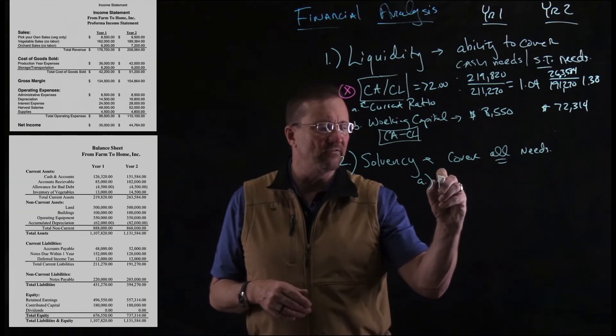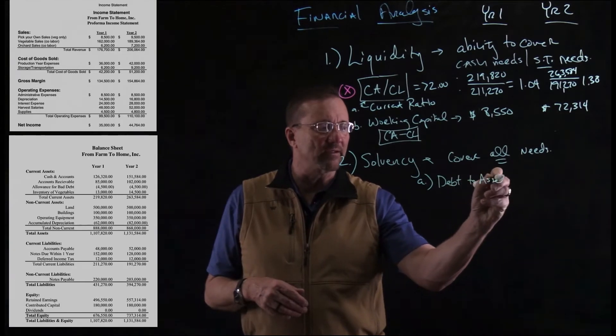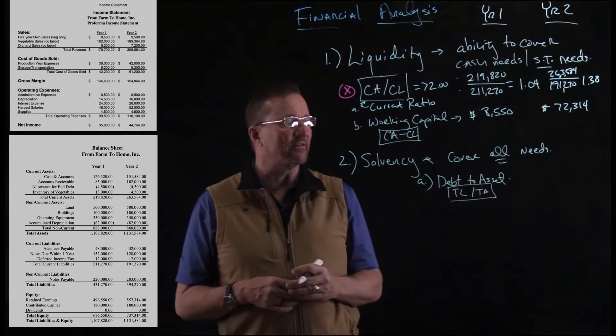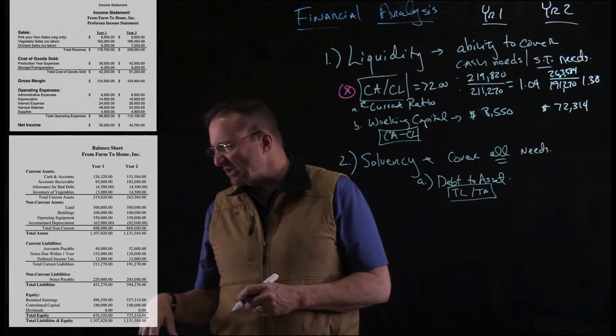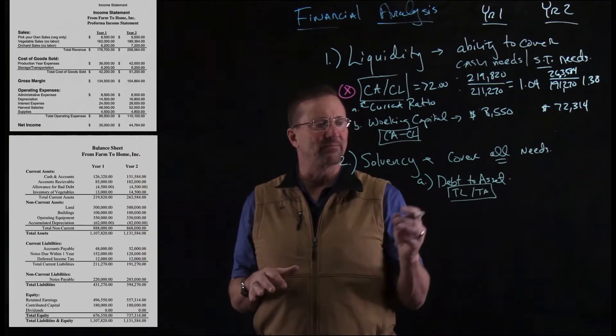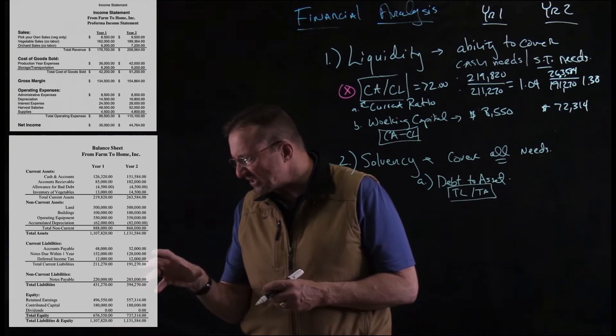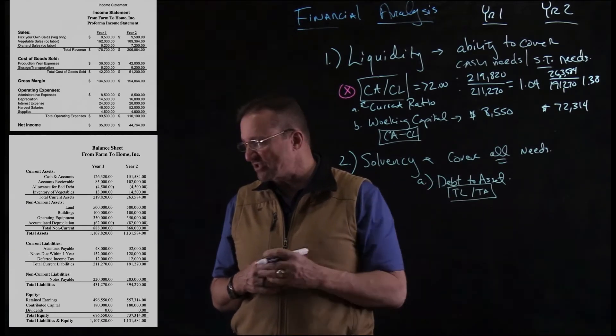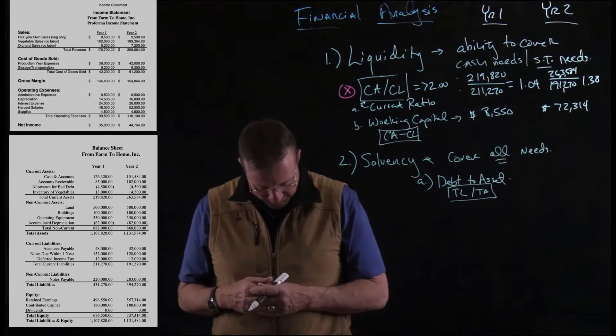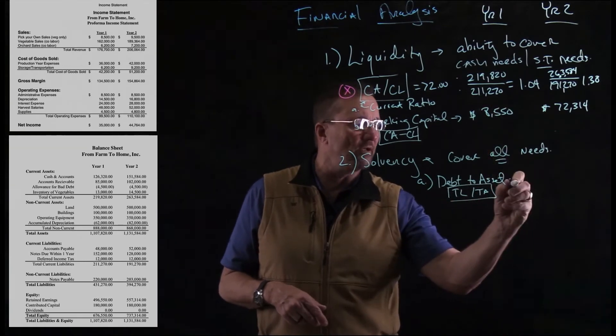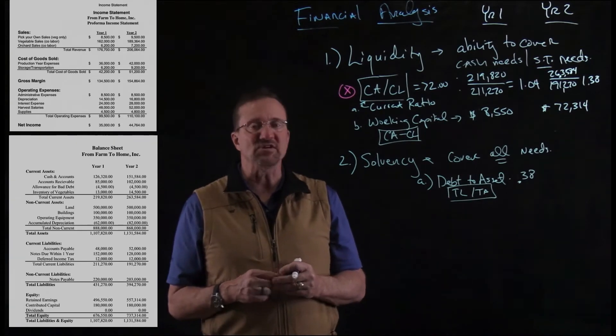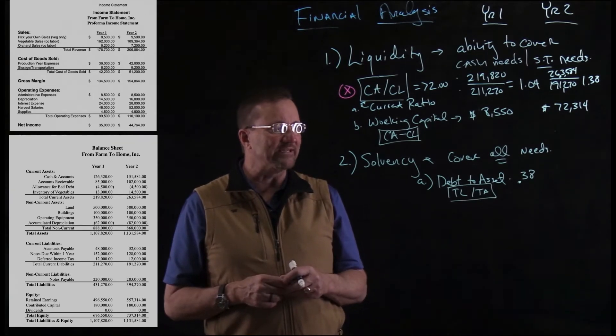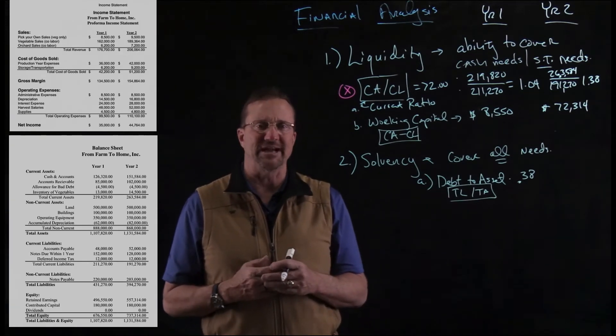So again, looking at the balance sheet, we're looking at total now. And so the first one we're going to do is debt to asset. Write that down with me. Debt to asset. And really, it's just total liabilities, that's the debt, divided by total assets. So pretty easy formula right there. And if we take our total assets, and I'm going to leave this stuff up on the board, of course, but I'm not going to keep writing these down. So we can just look at our total assets. Total assets in year one were $1,107,820. And that's the total assets. Our total liabilities, that's the total debt, is going to be $431,270. So if we divide that out, the answer is going to be in year one, a 0.38 for year one.